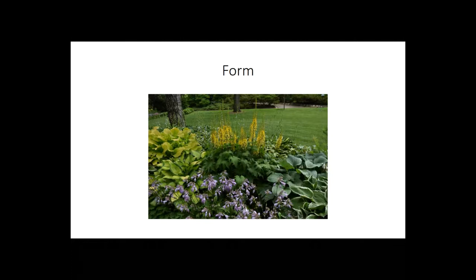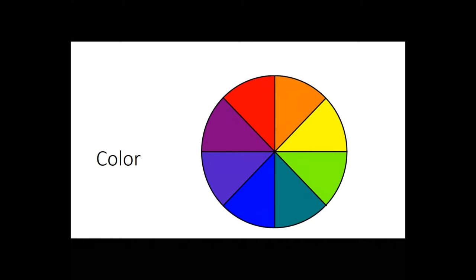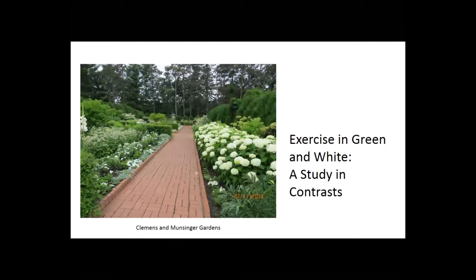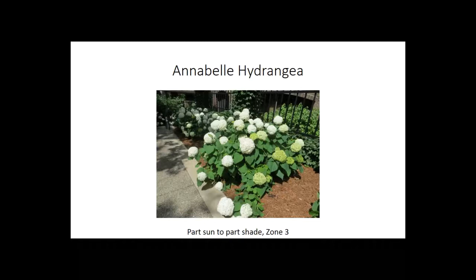Let's talk about color — specifically white, which is a color without hue. Green and white contrasts are some of the most beautiful you'll see in a shade garden. This photo is from Clemens and Munsinger Gardens in St. Cloud, Minnesota — an all-white garden. What draws your eye is the Annabelle hydrangea. Annabelle hydrangeas are the star of white gardens, being zone 3 hardy and great in part sun to part shade.